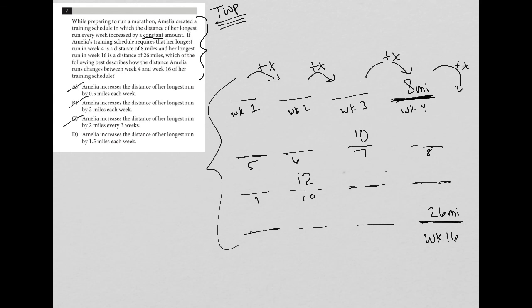So choice D better be the right answer, but let's just check it and make sure. Amelia increases the distance of her longest run by 1.5 miles per week. So that would tell us that she's at 9.5 here, and then 11, and then 12.5, and then 14, and then 15.5, and then 17, 18.5, and 20, 21.5, and 23, 24.5, and perfect, 26. So choice D must be the correct answer.